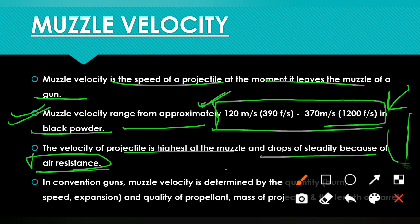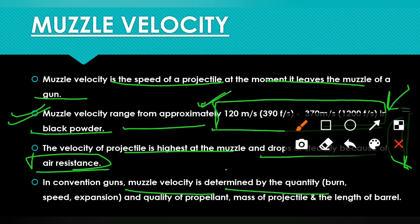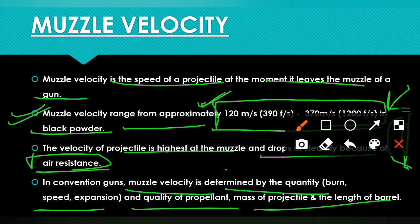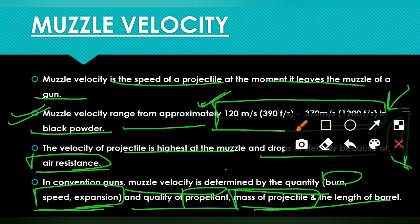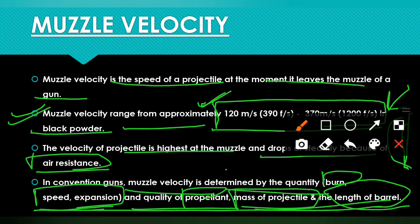In conventional guns, muzzle velocity is determined by the quantity, burn speed, and expansion, as well as the quality of the propellant, the mass of the projectile, and the length of the barrel. To determine the muzzle velocity of any gun, you need to know the burn speed, expansion quantity, propellant quality, projectile mass, and barrel length. These are all very important points.